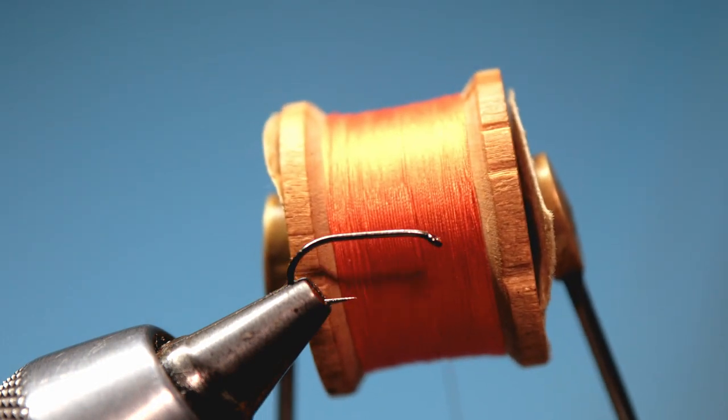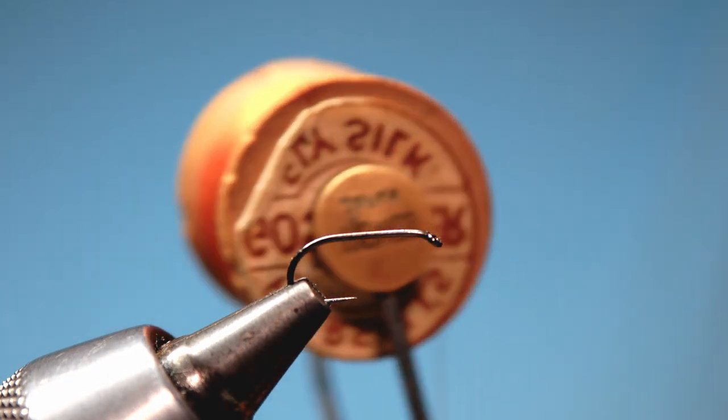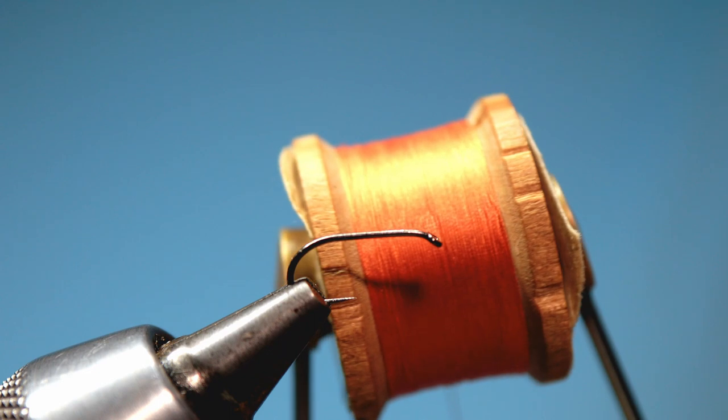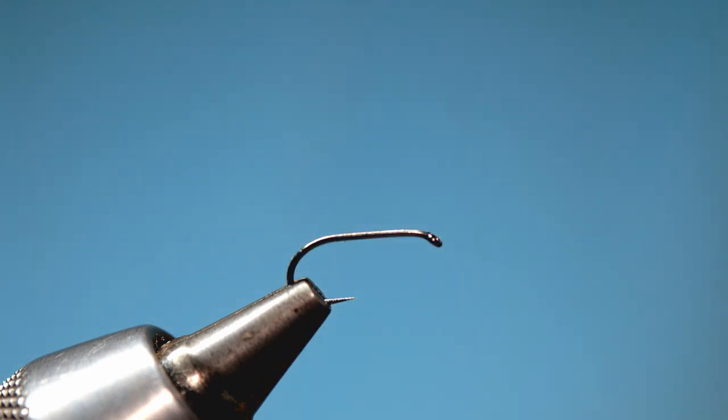For this pattern I'm using Persil's number 19 hot orange silk and again using a Partridge ideal standard dry fly hook in a size 14.